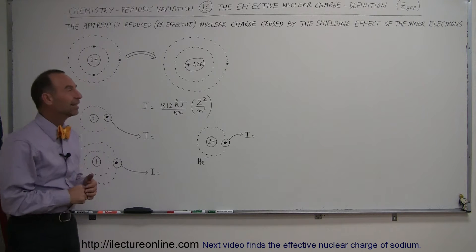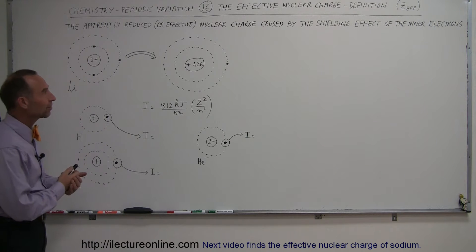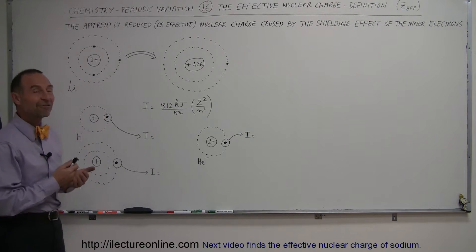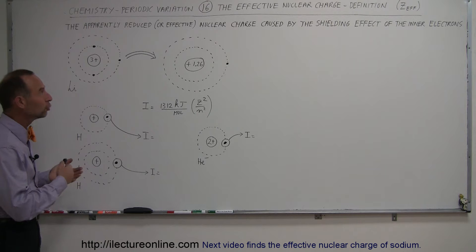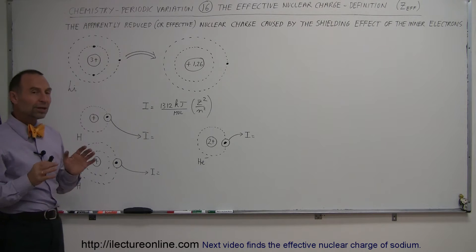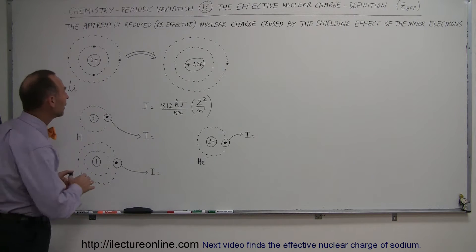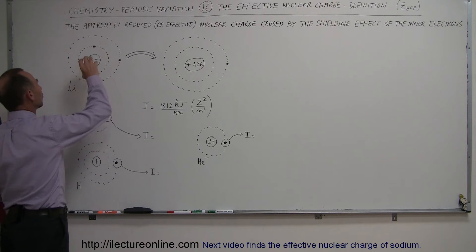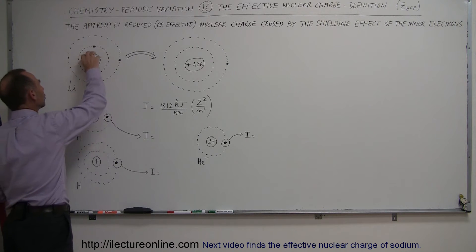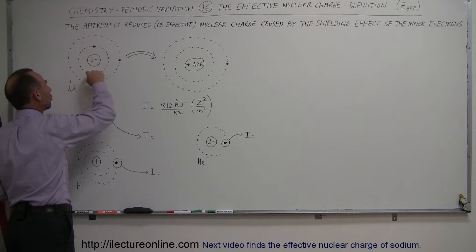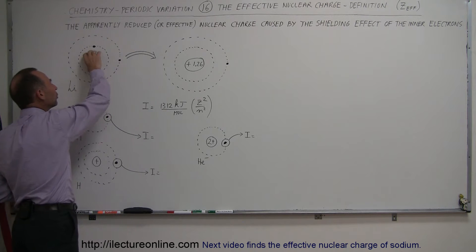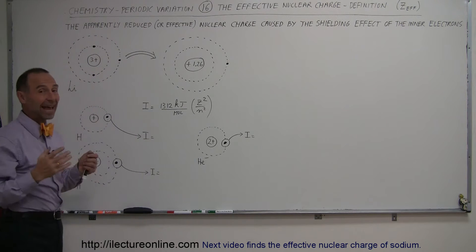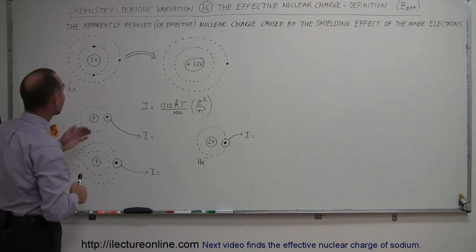Welcome to iElectronLine. Here we're going to tackle the topic of the effective Z, or the effective nuclear charge — the reason why we can't always just assume that the nuclear charge, relative to the electrons in outer orbits, is equal to the charge that's actually there.